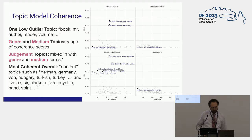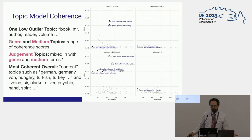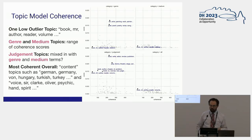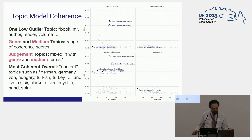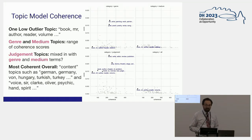The judgment terms didn't show up in their own topics, but seemed mixed in with genre and medium terms. The most coherent topics were ones associated with content — for example, words like German, Germany, Hungary, Turkish, Turkey. There was also an interesting topic with words like voice, Sir, Clark, Oliver, psychic, hand, spirit — which someone else might want to investigate.